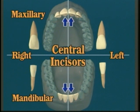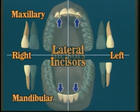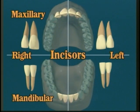There are two central incisors and two lateral incisors — one right central and one right lateral incisor, and one left central and one left lateral incisor.